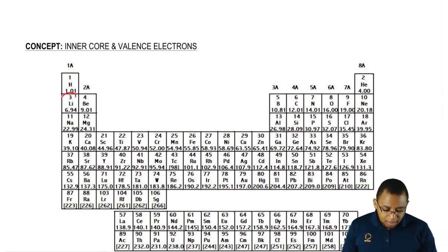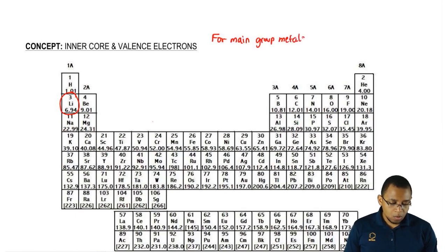For example, lithium is in group 1A, so lithium has one valence electron. We're going to say for main group metals, the number of valence electrons equals group number.